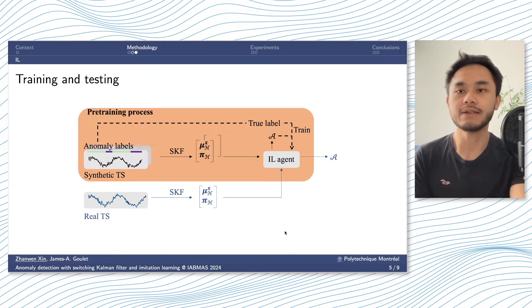And this is the framework to train the IL agents. We firstly have our synthetic time series with anomaly labels. We use switching Kalman filter to process this time series so as to have the hidden states. We pass the hidden states to the IL agents. And based on what it sees in the hidden states, it will decide an action. And we will compare this predicted action with the true labels that we have so as to train the agents.